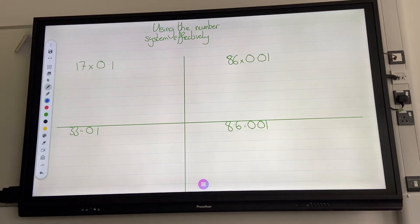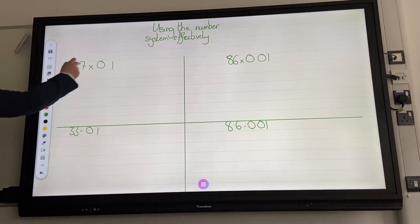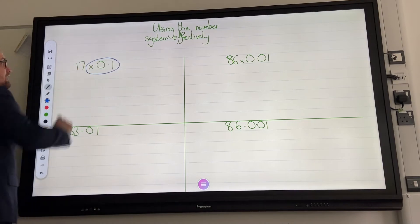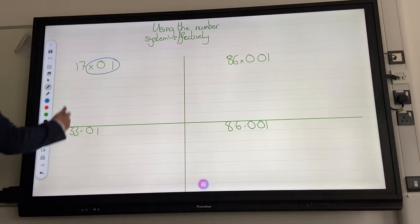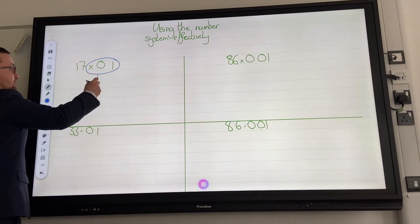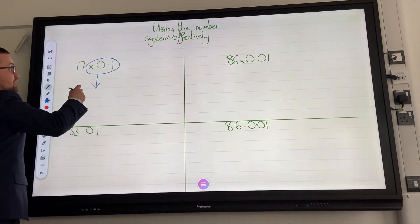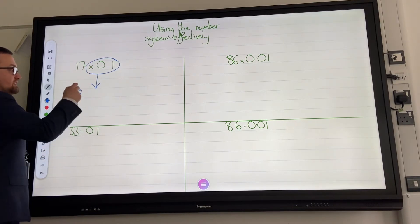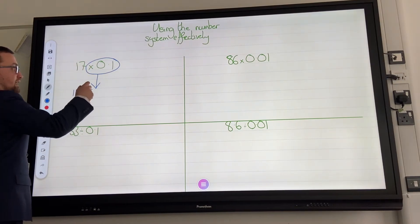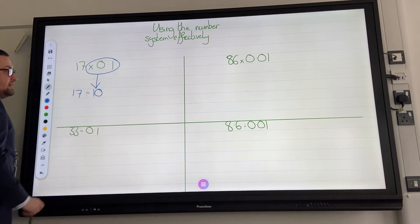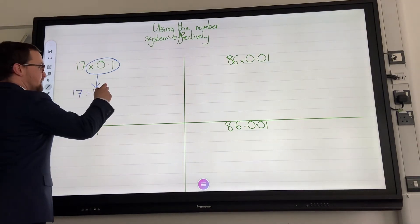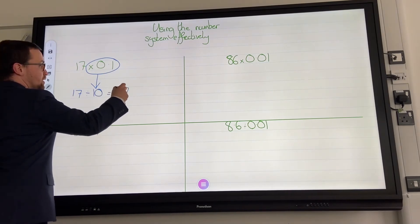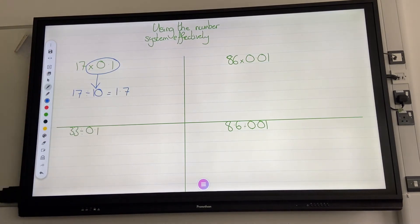17 times 0.1. Now, this times by 0.1 isn't that nice, I wouldn't say. So, what we're going to do, we're going to do something slightly different, but it means exactly the same thing. So, 17 we're not going to do anything with, times by 0.1 is the same as divided by 10. So, 17 divided by 10 is 1.7.